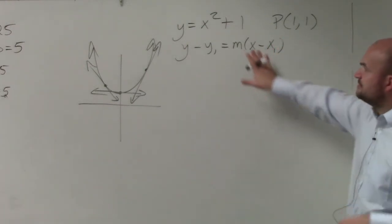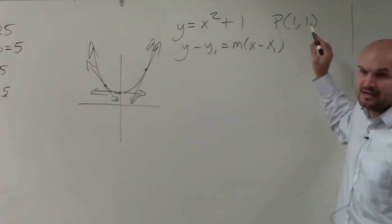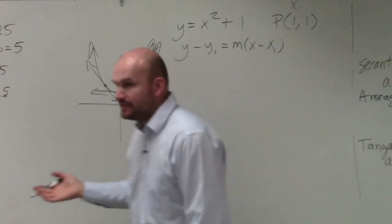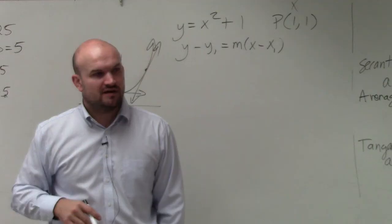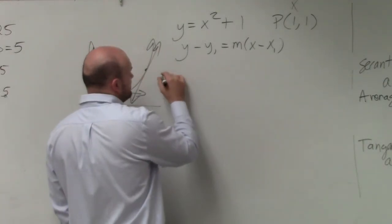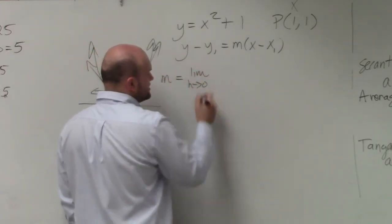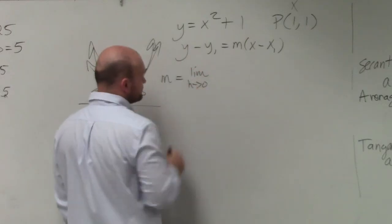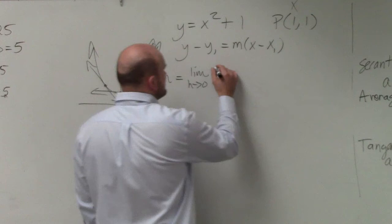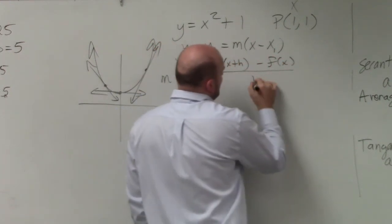So what we first want to do is be able to identify the slope at our given point 1 comma 1, or at the point when x equals 1, basically. So to do that, we can use our definition of finding the tangent line at that given point. So I can say my slope is going to be the limit as h approaches 0. I'm going to use our limit definition with the x plus h point. So I have f of x plus h minus f of x all over h.